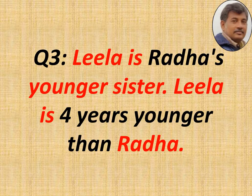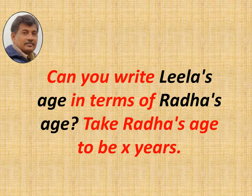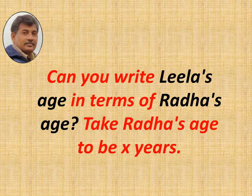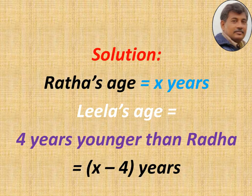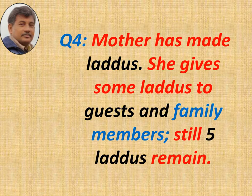Leela is Rada's younger sister. Leela is four years younger than Rada. How do you write Leela's age in terms of Rada's age? We assign a variable based on Rada: let Rada's age be x years. Four years younger means minus, so Leela's age equals x minus 4 years.